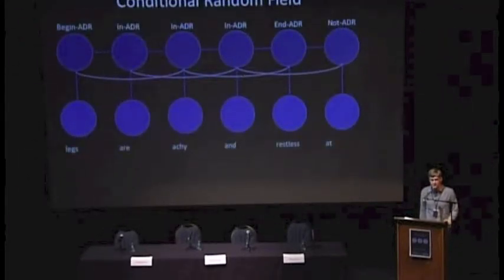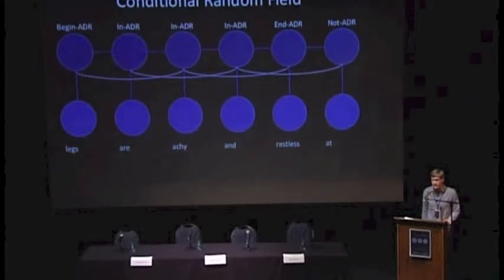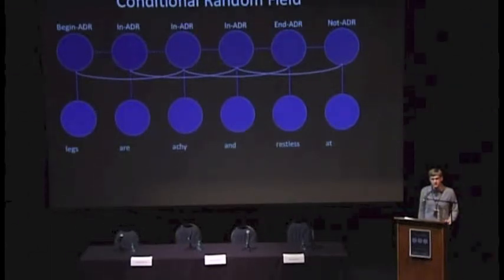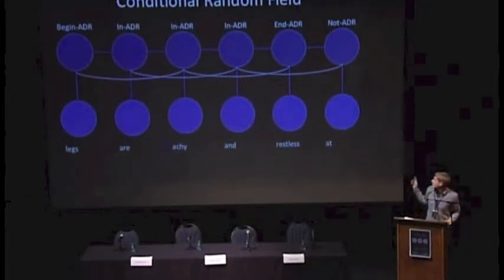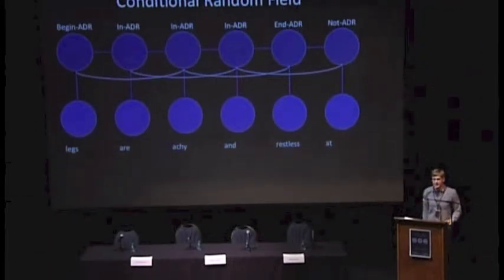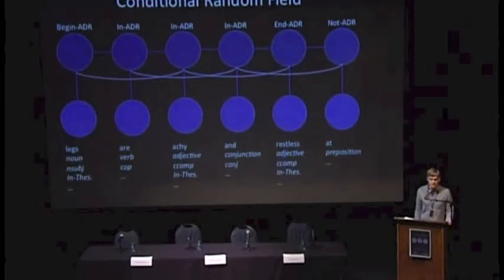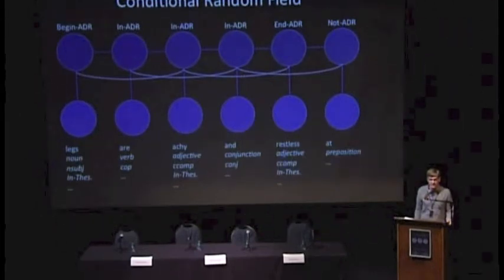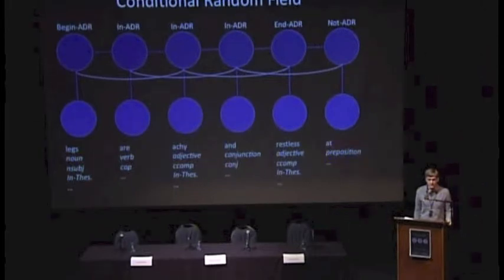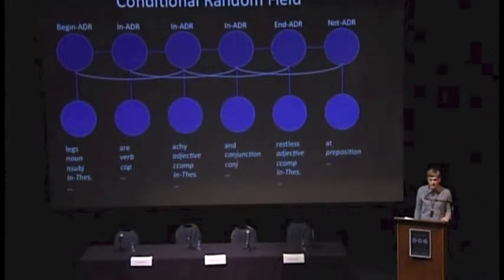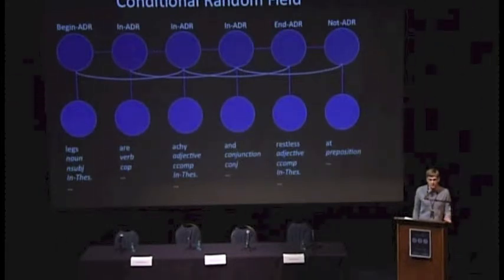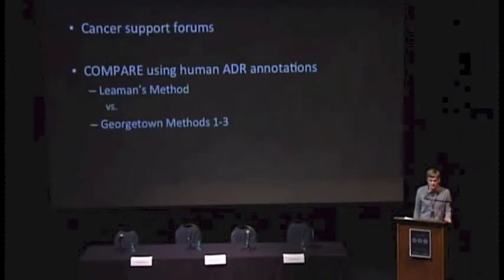Finally, the more interesting method is the conditional random field from Georgetown. We try to label terms as either part of an ADR phrase or not part of an ADR phrase. At the very end you see 'not ADR,' indicating it's nothing to do with an ADR. At the bottom you see terms, and also features associated with the terms — so 'legs' is a noun, it's the subject of the phrase, and it appears somewhere in the thesaurus. By using these features and the relationships between words, we can determine where the mention of an ADR stops and starts.